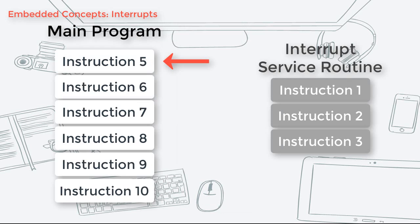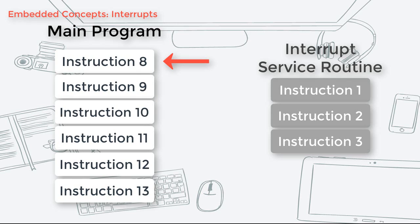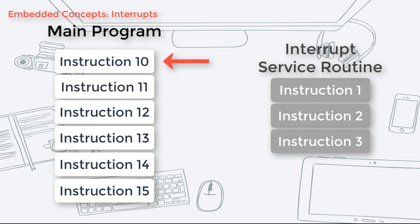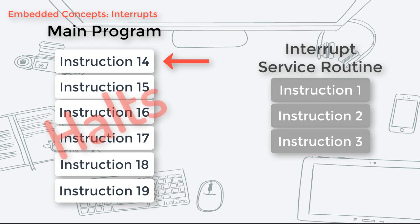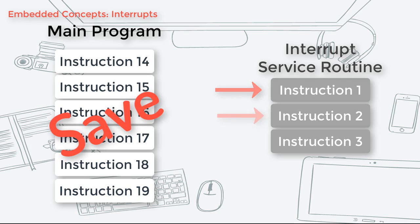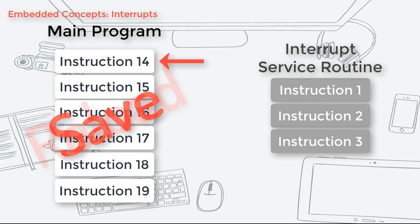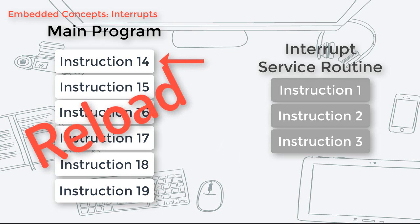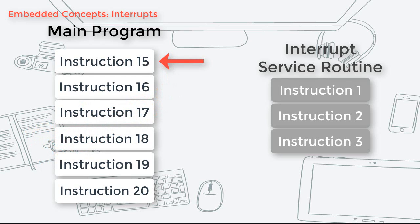Normally, an MCU executes instructions one after another that you define in your main program. When an interrupt occurs, the MCU halts the execution of instructions in your main program, saves its current state so it can reload it later, and then proceeds to the Interrupt Service Routine appropriate for the interrupt that occurred. When the entire interrupt routine is executed, it then exits the ISR, loads back the state of the main program it saved earlier, and then continues the execution of the main program.